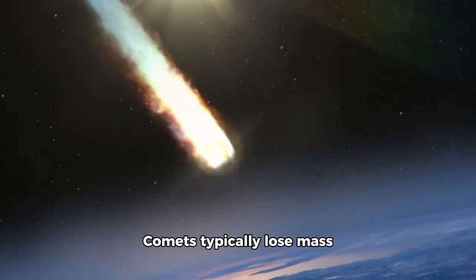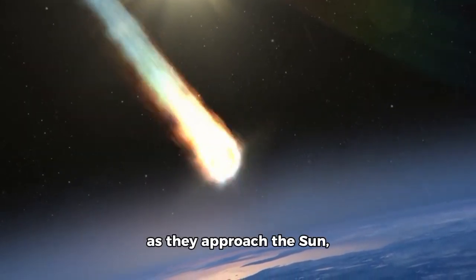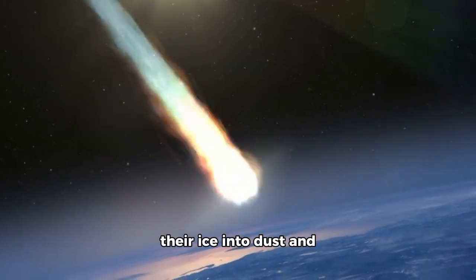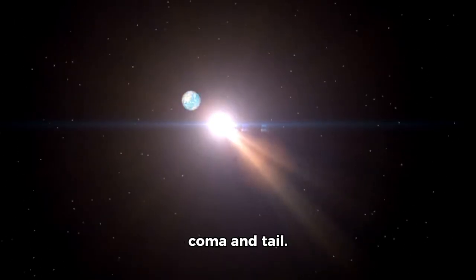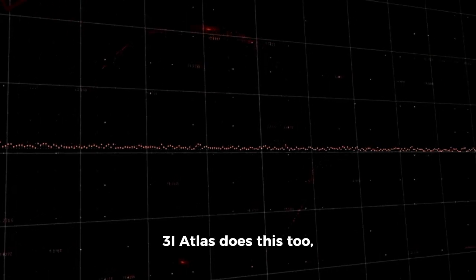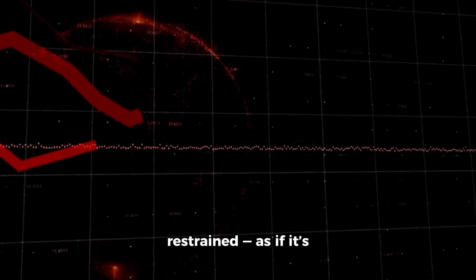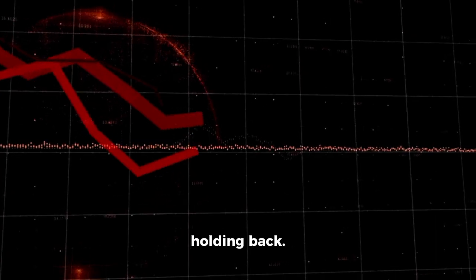Comets typically lose mass as they approach the sun, with solar heat vaporizing their ice into dust and gas, creating the iconic coma and tail. 3i Atlas does this too, but its mass loss is strangely calm, almost restrained, as if it's holding back.